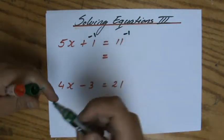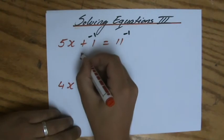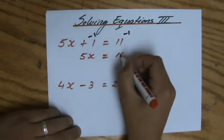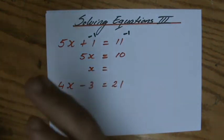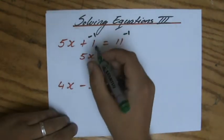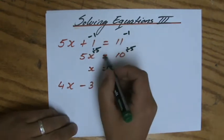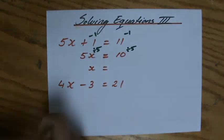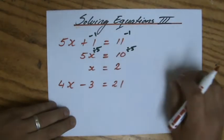So plus one, to get rid of it I do minus one, so 5x equals 10. Now I want to find out what x is, what 1x is. Now 5 times x, what is the inverse operation of times? Indeed, that is divide. So we're going to divide both sides, otherwise it's not equal, by 5.